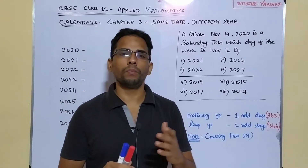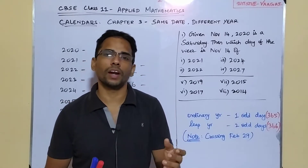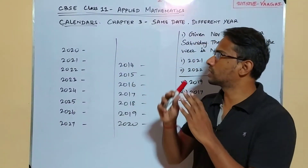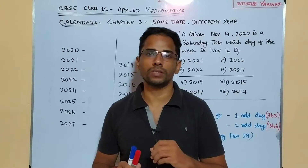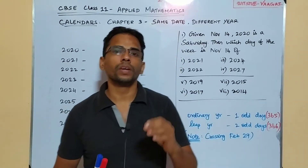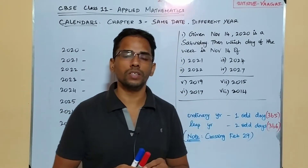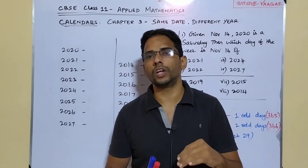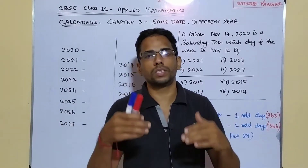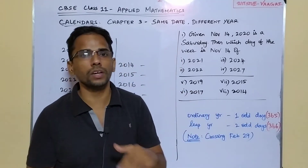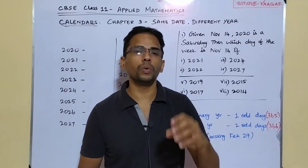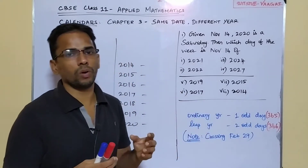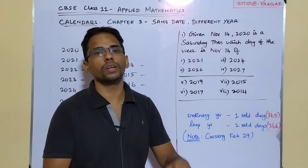Hi and hello everyone. Welcome back once again to our channel Vagai Academy of Mathematics. This playlist is for Class 11 CBSE Applied Maths, and we were seeing the topic calendars for the past previous sessions. We have already completed Chapter 1 and 2, and this is the continuation part. Here this is Chapter 3 of calendars, and we are going to work out some few important, very frequently repeated problems.